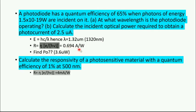Based on this, calculate the incident optical power required to obtain a photocurrent of 2.5 microamperes. We have R and Ip is given, then you can find P. R equals Ip by P, where Ip is photocurrent and P is incident power. R is constant throughout for a photodiode. You can find the answer is 3.6 microwatts.